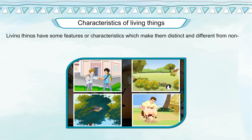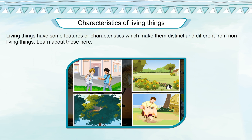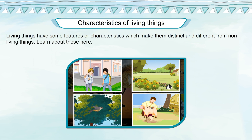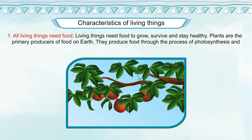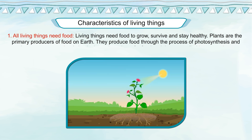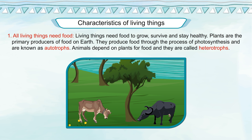Characteristics of Living Things: Living things have some features or characteristics which make them distinct and different from non-living things. All living things need food to grow, survive and stay healthy. Plants are the primary producers of food on earth. They produce food through the process of photosynthesis and are known as autotrophs. Animals depend on plants for food and they are called heterotrophs.